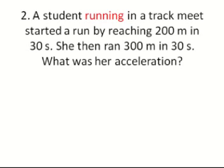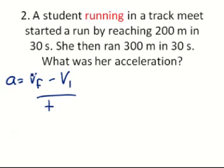We know that acceleration is equal to the final velocity minus the initial velocity all over time. But we also have problems because we don't have the velocities written in here. So we need to find the velocities, and the velocity is going to be distance over time.